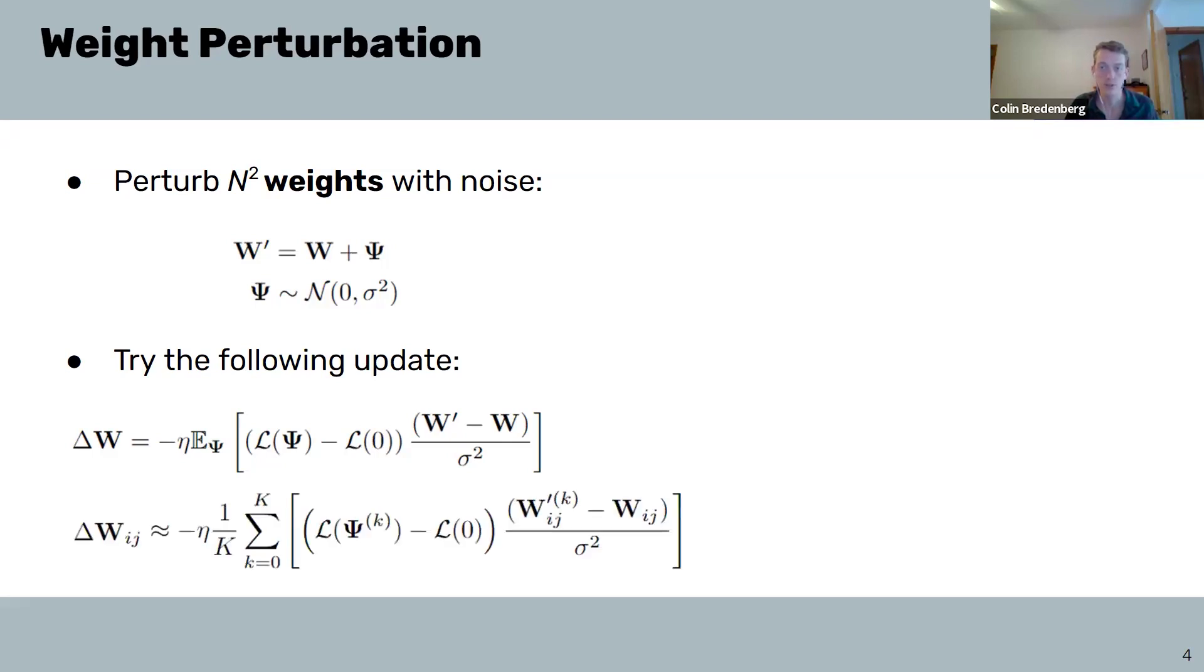Here, we're correlating changes in our loss, which is our loss with noise minus our loss without noise, with changes in a single parameter update WIJ. We're measuring WIJ prime, which is the perturbed weights relative to the original synapse weight.